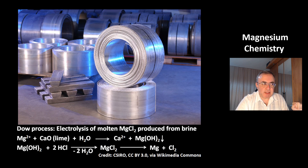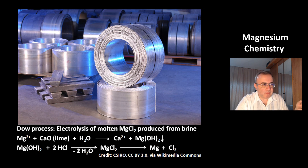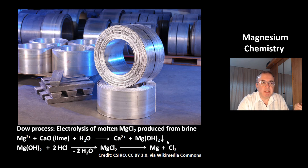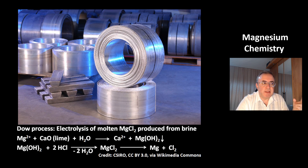This is the second process to make magnesium metal: the Dow process. It's electrolysis of molten magnesium chloride, which can be produced from brine — a concentrated salt solution. A magnesium solution is treated with lime (calcium oxide and water), giving calcium ions and a magnesium hydroxide precipitate. Then it's treated with hydrochloric acid to get magnesium chloride, and electrolysis gives magnesium metal and chlorine gas.